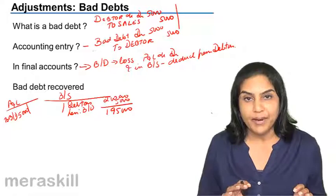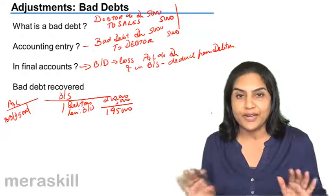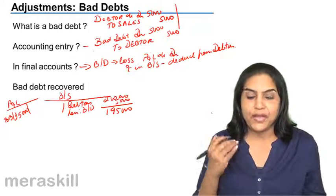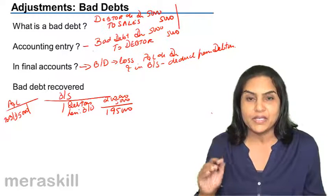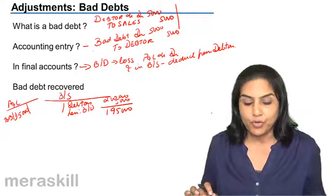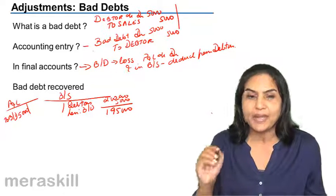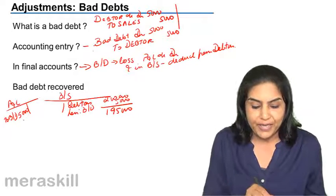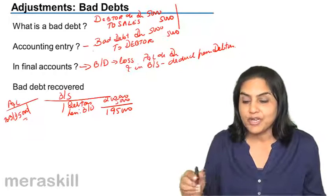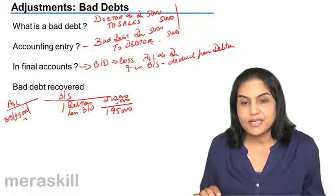The accounting entry for a bad debt is bad debt debit to debtor. The debtor's account is closed and credited, and bad debt account — a loss account — is created. If we get this adjustment after creation of the trial balance, the adjustment to the final accounts is: bad debt being a loss is debited to the profit and loss account, and debtor being an asset in the balance sheet is to be reduced. Therefore in the balance sheet, we say debtors less bad debts.